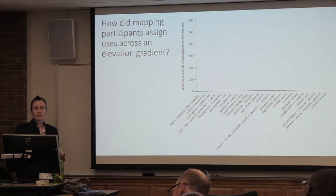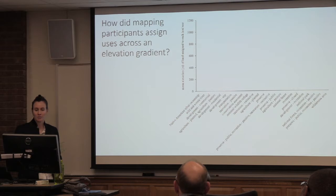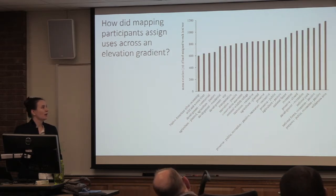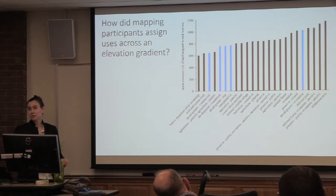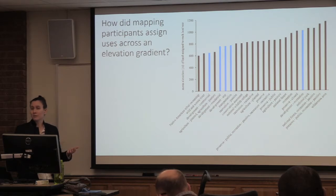We also found in our mapping projects that participants assigned uses across an elevation gradient because the landscape is topographically complex. Development uses are being assigned at lower elevations. So maybe people are really spatially connecting — we don't really like steep slope development or we're really concerned about it, so let's put development at lower elevations. Maybe that is something that people are actively doing.